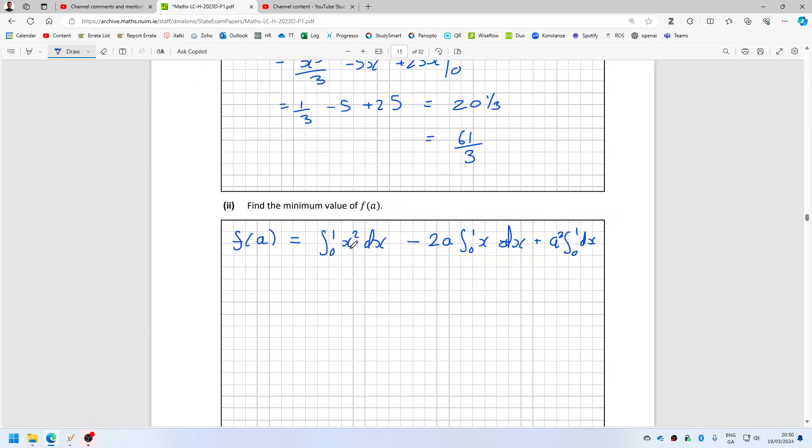So that would be x cubed over three. So that's a third minus two a and that'd be x squared over two, which is one over two minus zero plus a squared. So that would be a squared minus a plus a third.